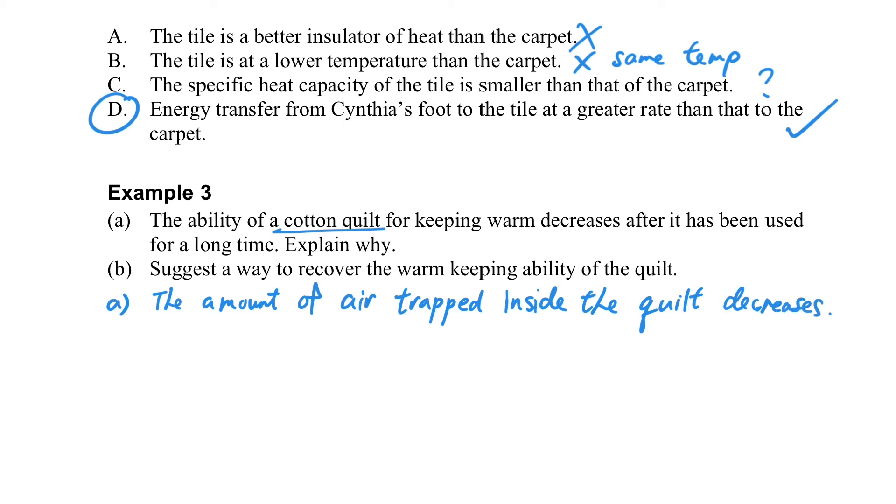Then what can we do in order to make it keep us warm again? So the core idea is we need more air to trap inside. So one way is to inject the air into the cotton quilt, so that it can form the layer of heat insulation in that case.